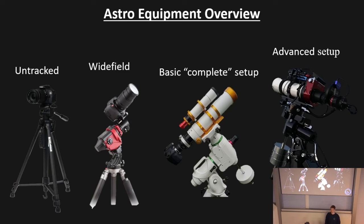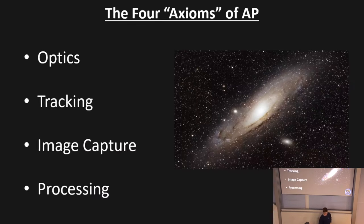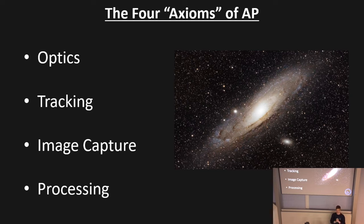Now I'll talk about the theory of how we do astrophotography. There are four key things that are important: optics — what are you using to focus and gather your light; tracking — how do you track that object through the night sky and keep it stable for long exposures; image capture — what sort of camera do you need; and processing — how do you go from a bunch of images of the night sky to a final picture. I'll cover each one.